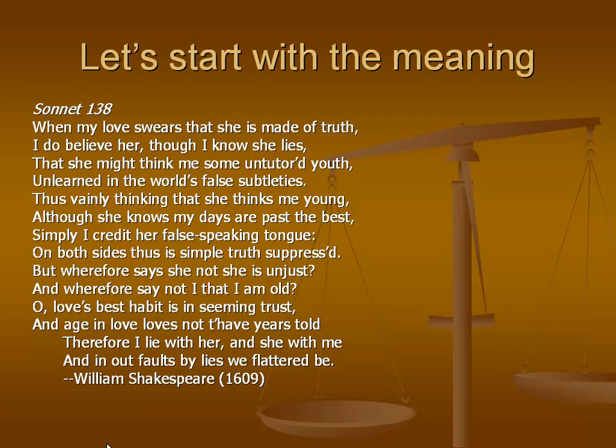He goes on to say she might think him 'some untutored youth, unlearned in the world's false subtleties.' He's willing to believe her though he knows she's lying, so that she might think he is naive. 'Thus vainly thinking that she thinks me young' — he's not young, and he wants this love of his to think that he is. By being naive, it makes him seem young. 'Although she knows my days are past the best' — she knows he's not really young. 'Simply I credit her false speaking tongue' — she's a liar, and he chooses to believe her lies, so they're both lying to each other. 'On both sides, thus, is simple truth suppressed.'